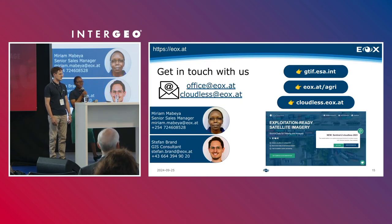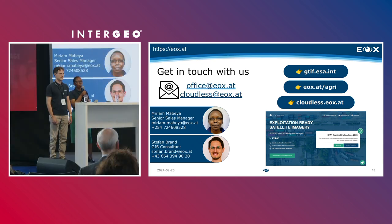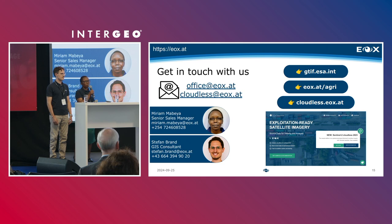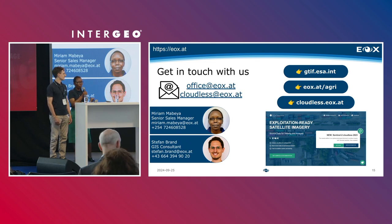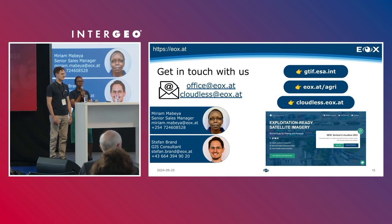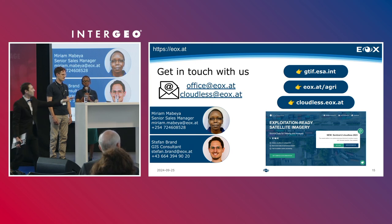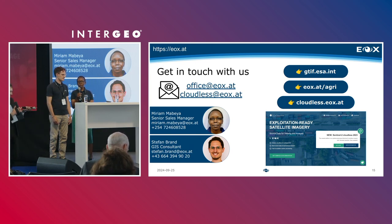Please get in touch with us at EOX.at or cloudless at EOX.at. Visit our website and the Cloudless website — you can download free samples and documentation for the imagery, or buy our products directly from the website by clicking the Buy Now button. Thank you so much for your attention, and we are free to take questions.